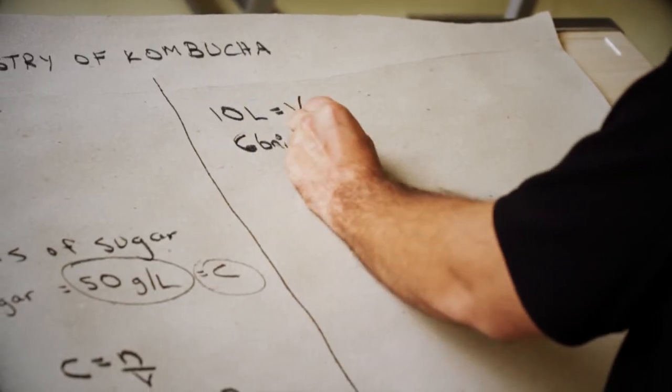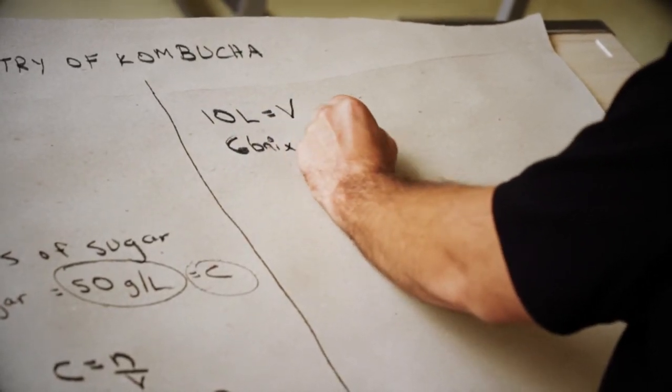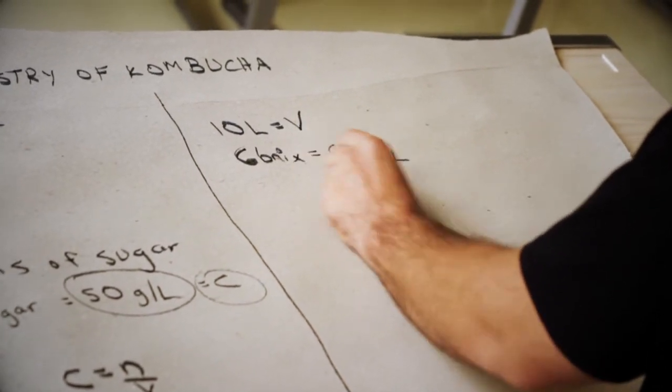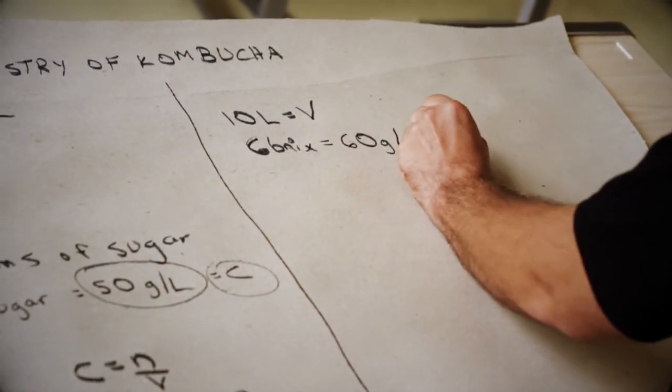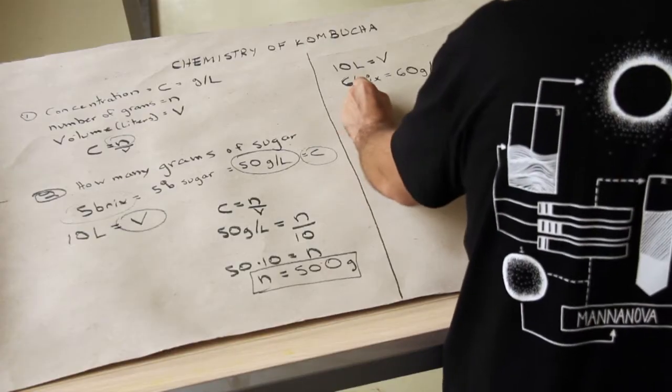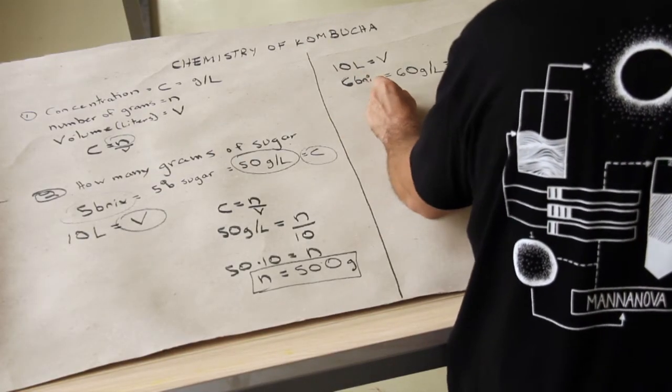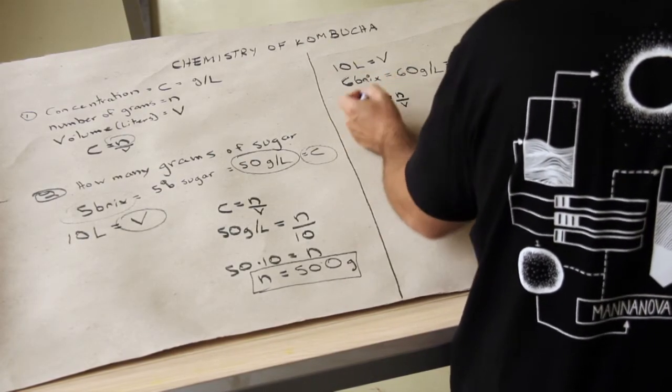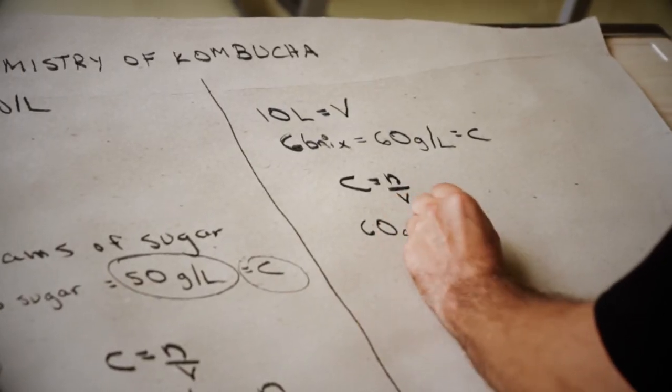I want a concentration of, let's say, 6 bricks, equals 60 grams per liter. So what's that? Grams per liter is concentration. So if I go back to my formula here, C equals N over V, what's my C? My C is 60 grams per liter.